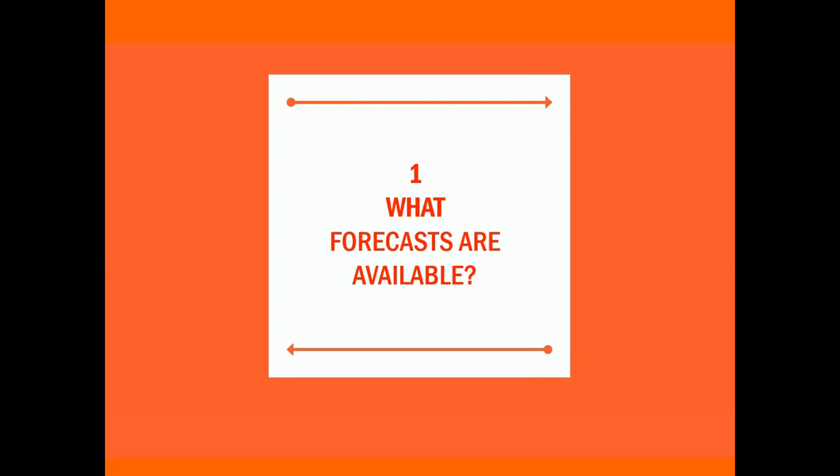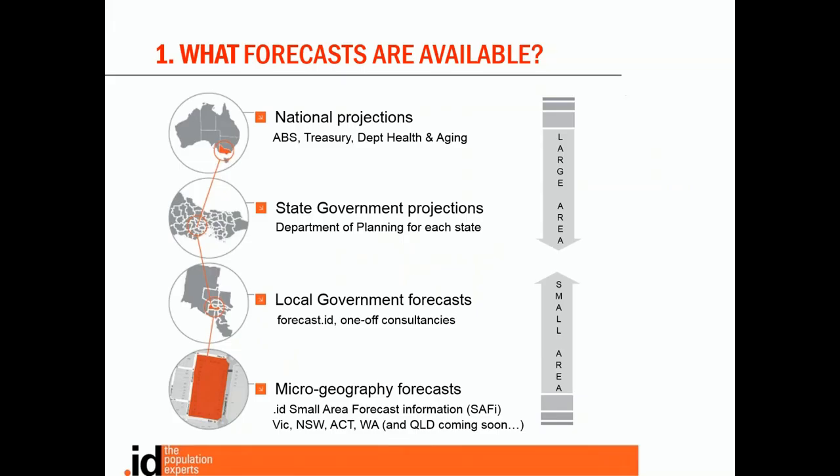A good place to start is with a comprehensive list of all of the forecasts that you have to choose from. The forecasts are typically categorized as large area or small area depending on their granularity. In Australia the organizations creating forecasts are the Australian Bureau of Statistics and the Federal Treasury who produce national projections. These are for federal budget allocations and electoral boundary allocations. They will tell you about the size of the Australian population but little about where the population will be distributed beyond the states. The ABS do produce a more granular set of forecasts for the Department of Health and Ageing or the National Aged Care Data Clearinghouse. They produce a national set of projections for each SA2 in Australia. However we have quite serious reservations about their accuracy and we'll talk a bit more about this later.